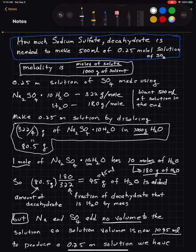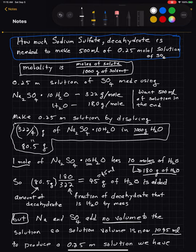So: how much sodium sulfate decahydrate is needed to make 500 milliliters of 0.25 molal solution of sulfate? And this is 500 milliliters of final solution — after you mix the water with the sodium sulfate decahydrate.